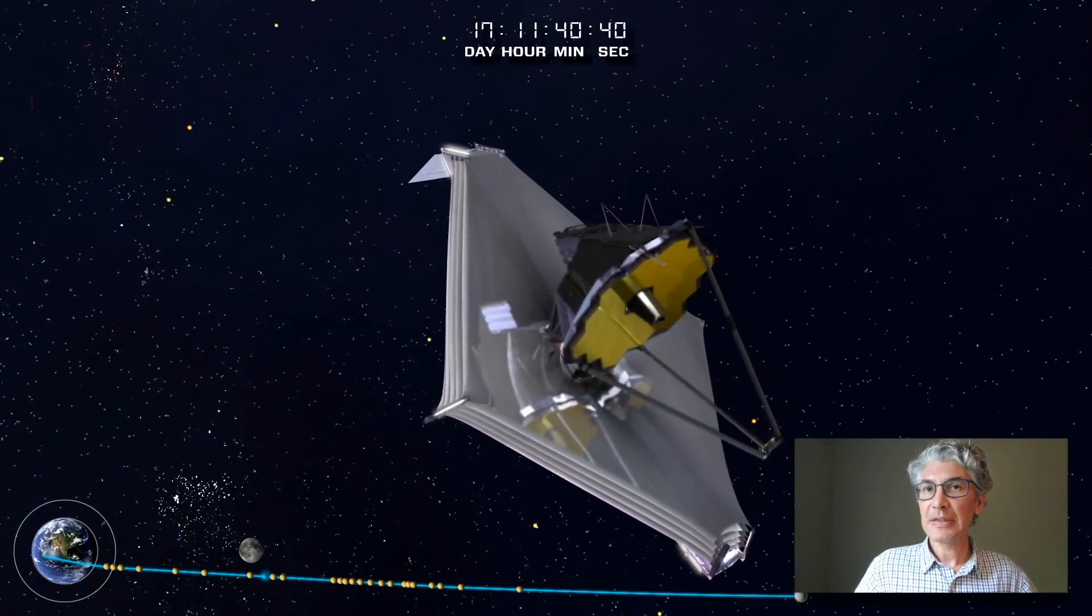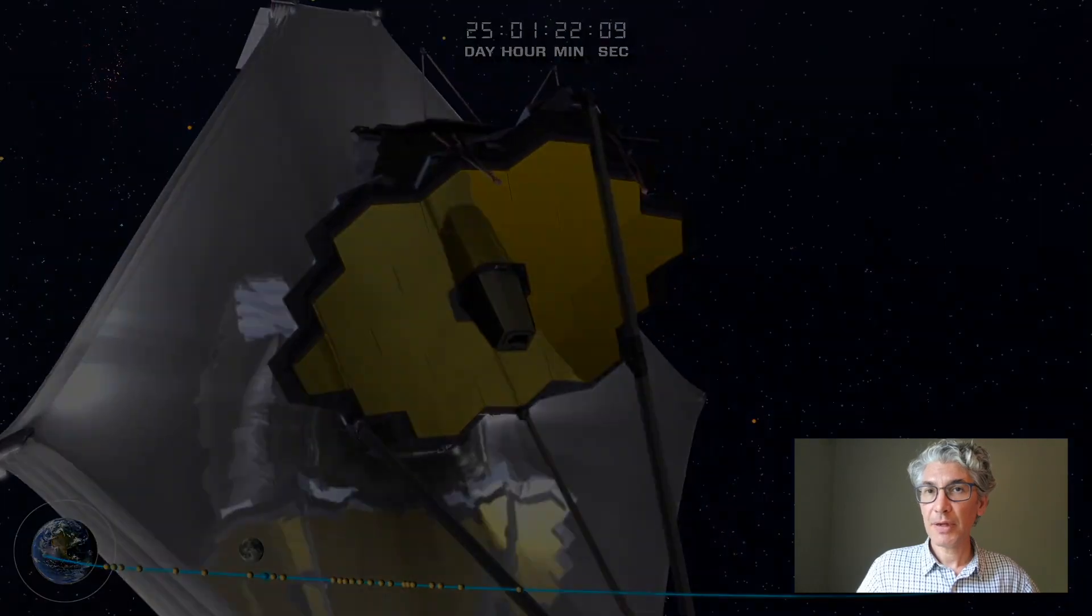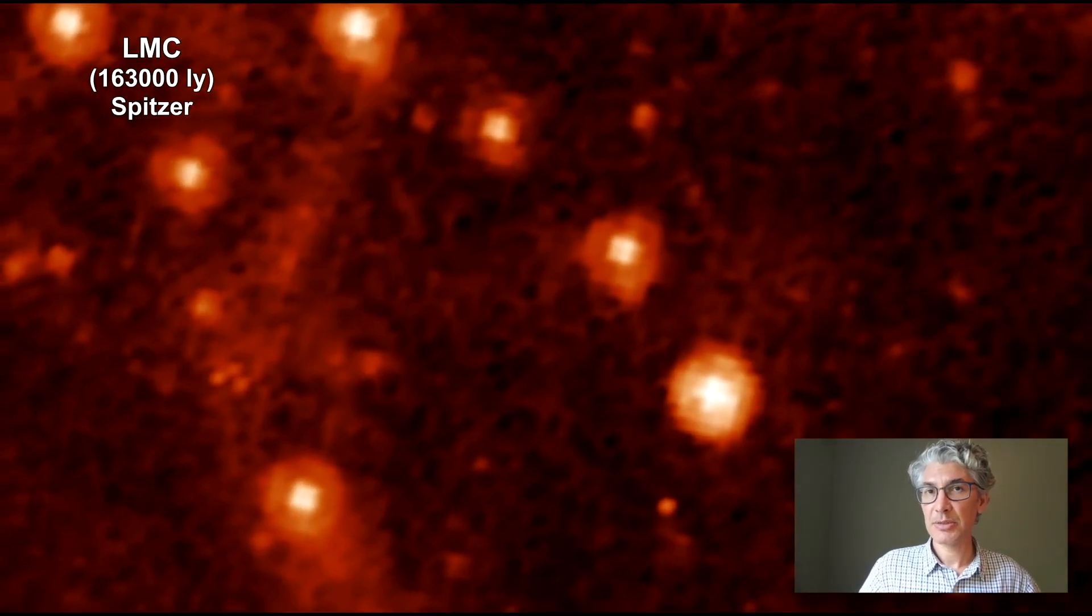The new capabilities of the James Webb Space Telescope allow sharper infrared images than were possible with its predecessor, the Spitzer Space Telescope.